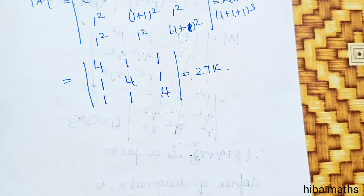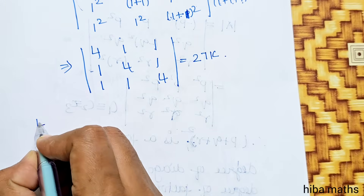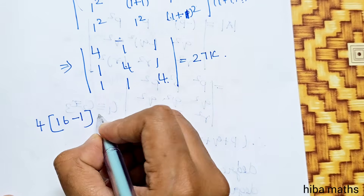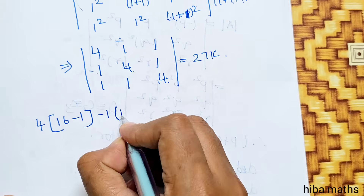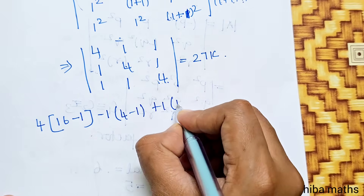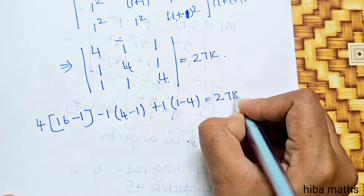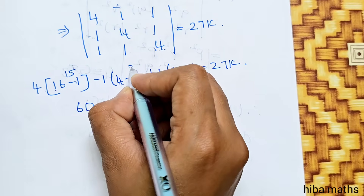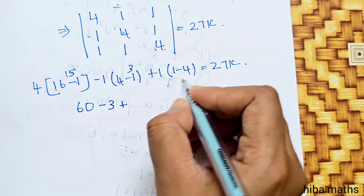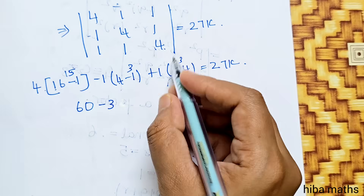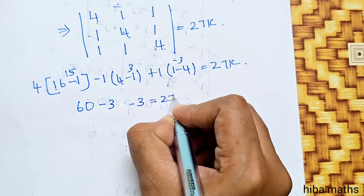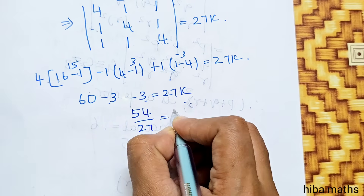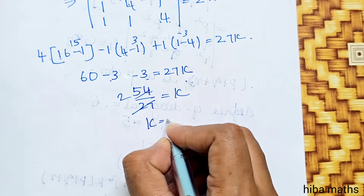Now expand the determinant: 4 into 4 = 16, minus 1; that gives 15. Then 4×4 = 60 minus 1 = 3, minus 3, plus 1 into 1 minus 4 equals minus 3. So the determinant equals minus 3 minus 3 = minus 6. Therefore minus 6 equals 27K, which gives minus 6 divided by 27... wait — so minus 54 divided by 27 equals K, giving K equal to 2.